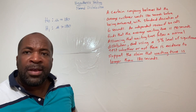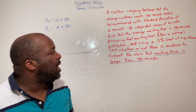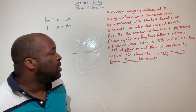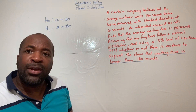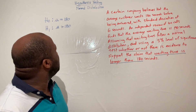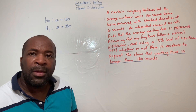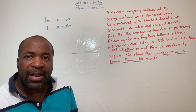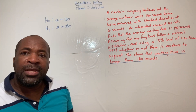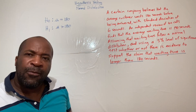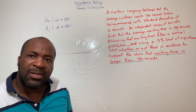If the question asked whether the waiting time is different from 180, we would use 'not equal to' instead of 'greater than.' There are three possibilities: μ greater than 180 (increase), μ less than 180 (decrease), or μ not equal to 180 (any change, unspecified direction).